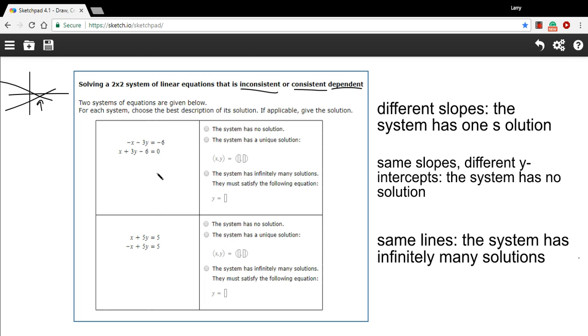So the first thing we want to look at in these kinds of problems is the slopes of these lines and see if they're the same slope or not. So what I'd recommend doing is taking these equations that you're given here and solving them for y so they're in that y equals mx plus b form.